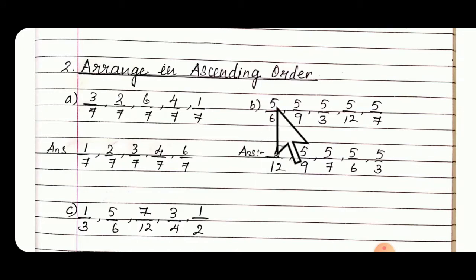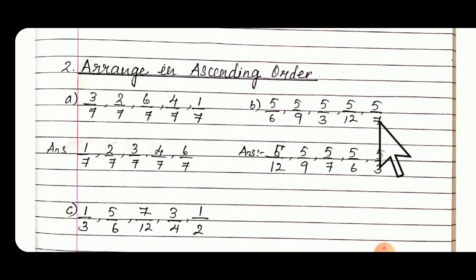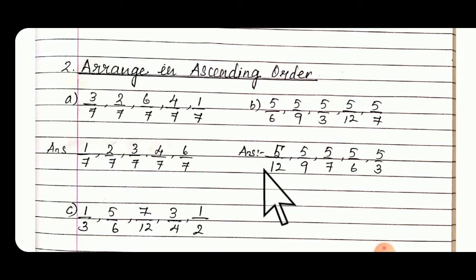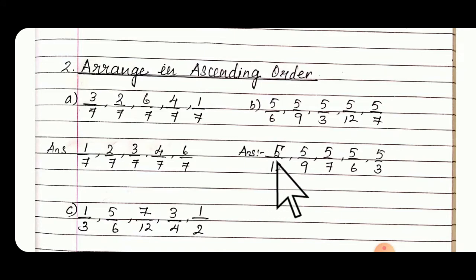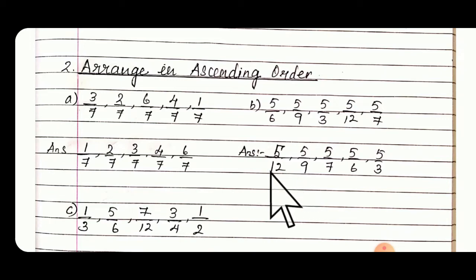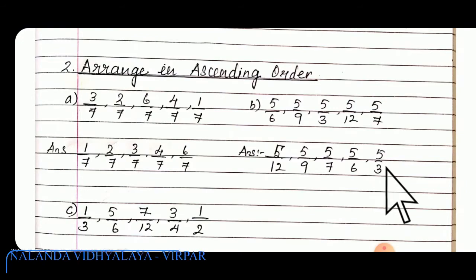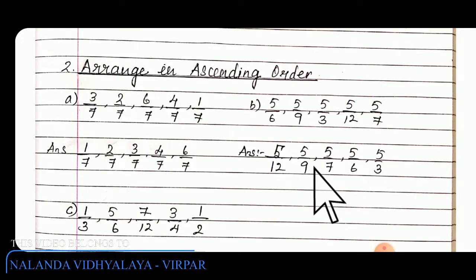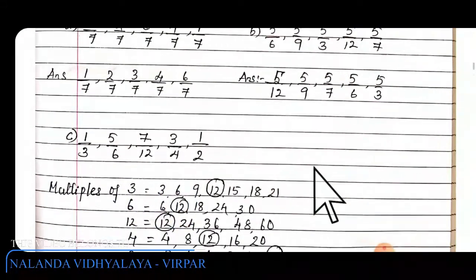Then B — all the numerators are same and denominators are different. So what is the portion here? As it is ascending order — smaller to big — 12 parts means small pieces are big, so more here. The order is 12, then 9, then 7, 6, 3. So 5/3 will be having the greater portion, and small to big it becomes that order.